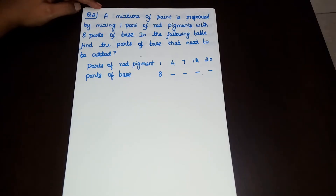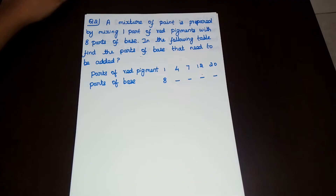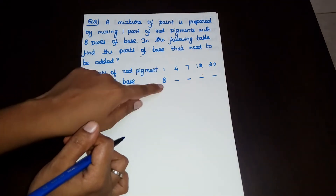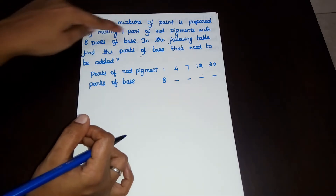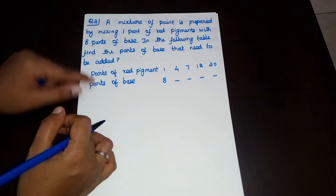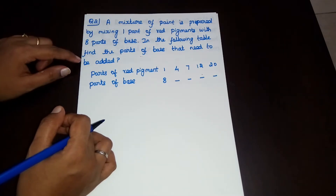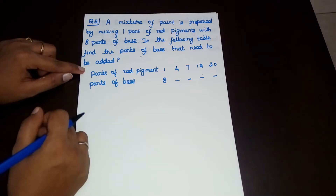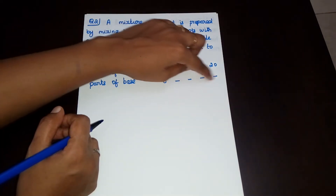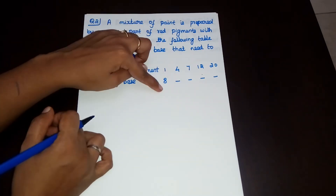Question number 2. A mixture of paint is prepared by mixing one part of red pigment with eight parts of base. In the following table, find the parts of base that need to be added for each part of red pigment.